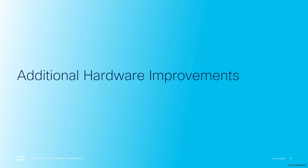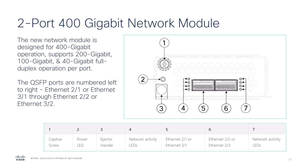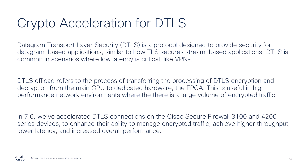We've reached the four additional enhancements made in 7.6. The first being USB port control for the front panel USB Type-A port. Previously, there was no option to disable this, but now the 1010, 1100, 3100, and 4200 series provide a configurable option to disable it. Our second enhancement is a new two-port 400-gig network module for the 4200 series to support higher bandwidth requirements, and it supports 400-gigabit, 200-gigabit, 100-gigabit, or 40-gigabit full duplex operation per port. Next up at number three, we have individual interface mode support for clustering of the Secure Firewall 3100 and 4200 series devices, allowing high traffic isolation and more granular topology handling, as each traffic type can have a dedicated interface. Closing us out at number four is crypto acceleration for datagram transport layer security, where we've accelerated DTLS connections for Secure Firewall 3100 and 4200 series devices, enhancing their ability to manage encrypted traffic, have lower latency, and increase their overall performance.